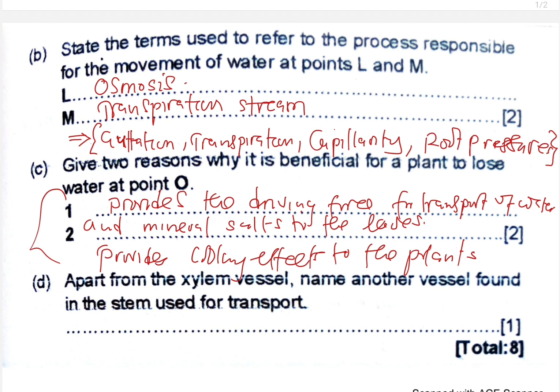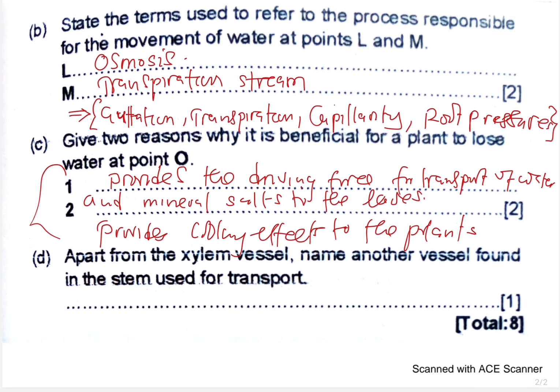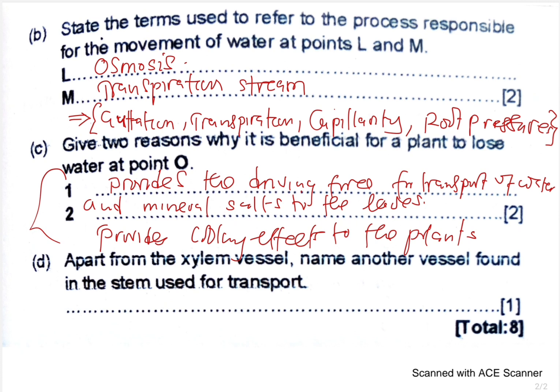Apart from the xylem vessel, name another vessel found in the stem used for transport. Aside from the xylem, name another vessel found in the stem used for transport. I leave this question up to you — make sure you answer this question as you go through and give your feedback so we can all learn.